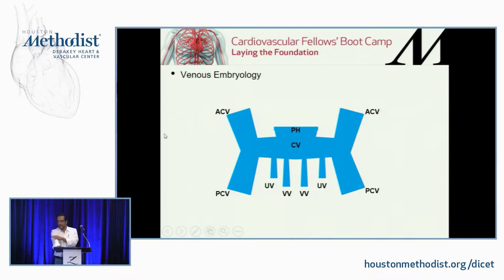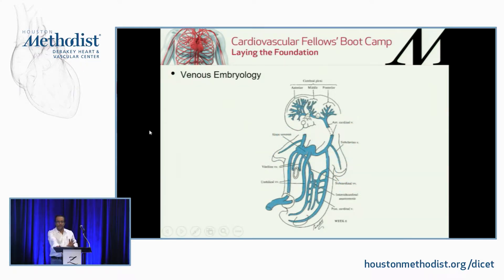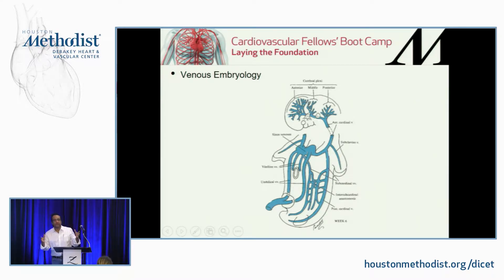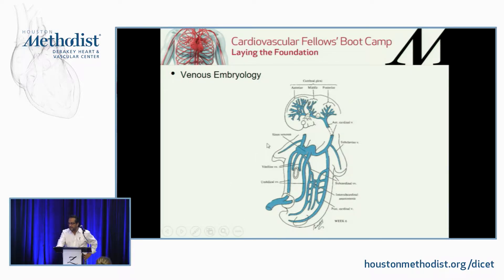This is obviously a drawing — a picture — but it helps people who have trouble visualizing where everything goes. It summarizes, in general, where the veins come from, so when you have a question you have an idea where these come from. We have the anterior cardinal veins and posterior cardinal veins on each side, the umbilical veins, and the vital veins.